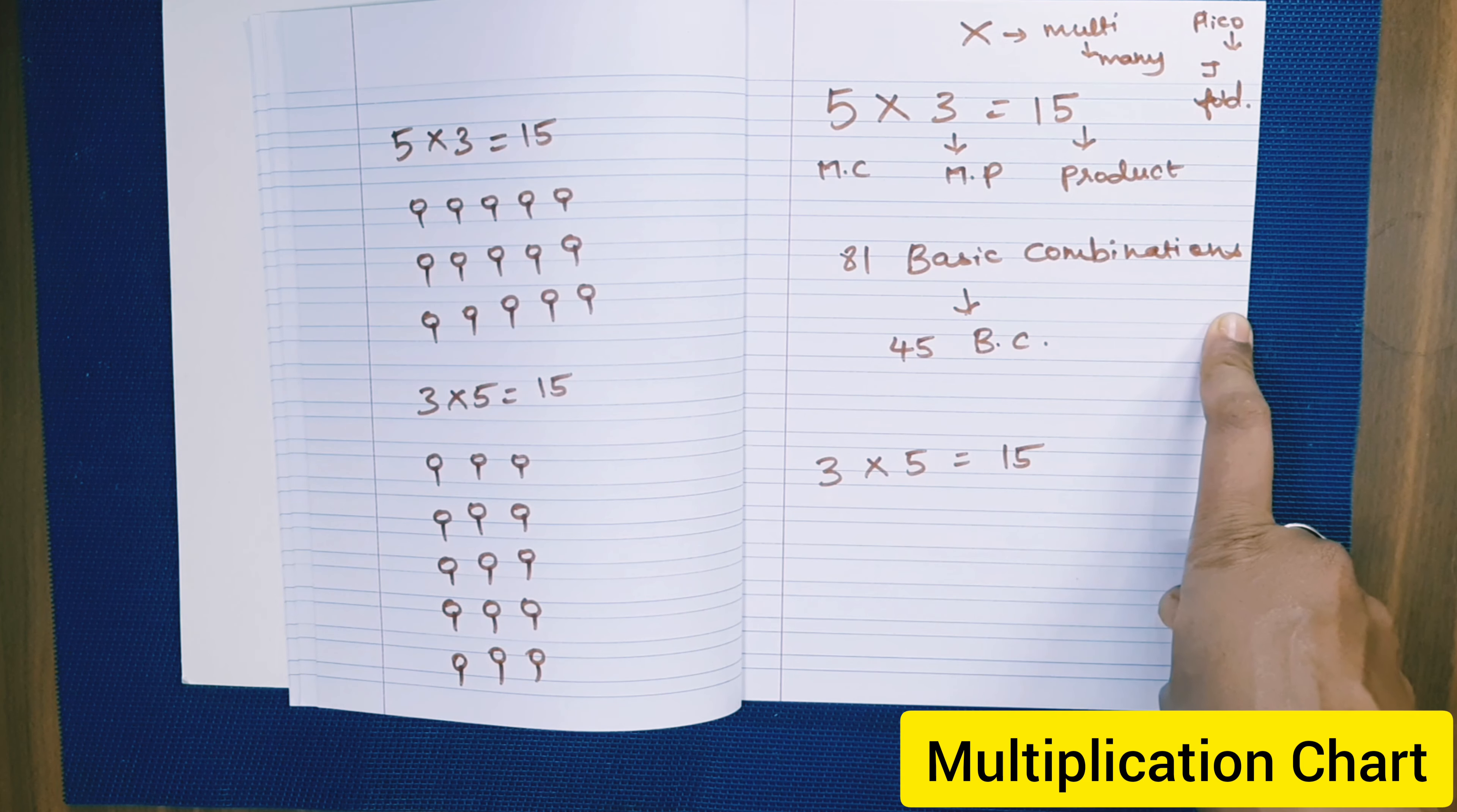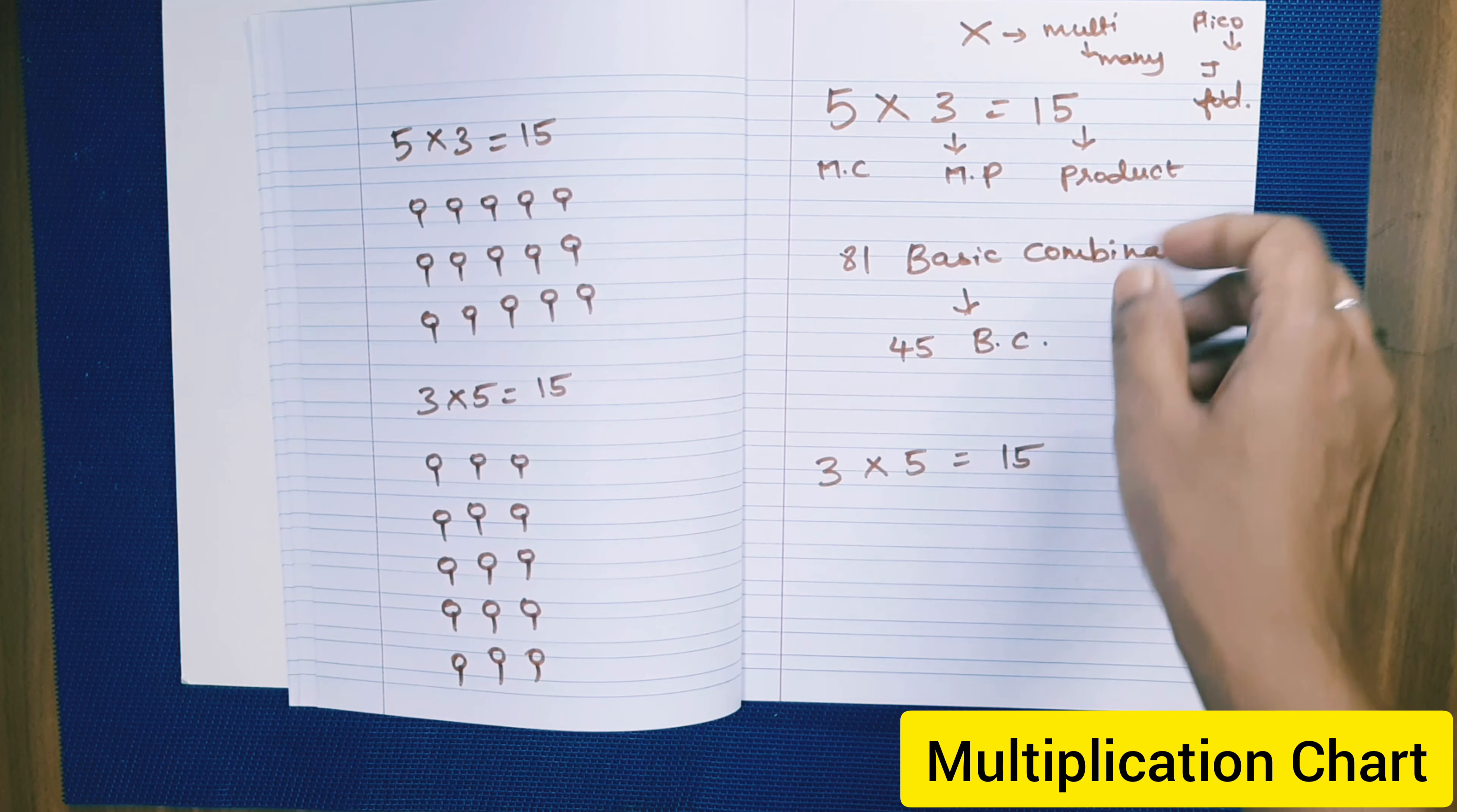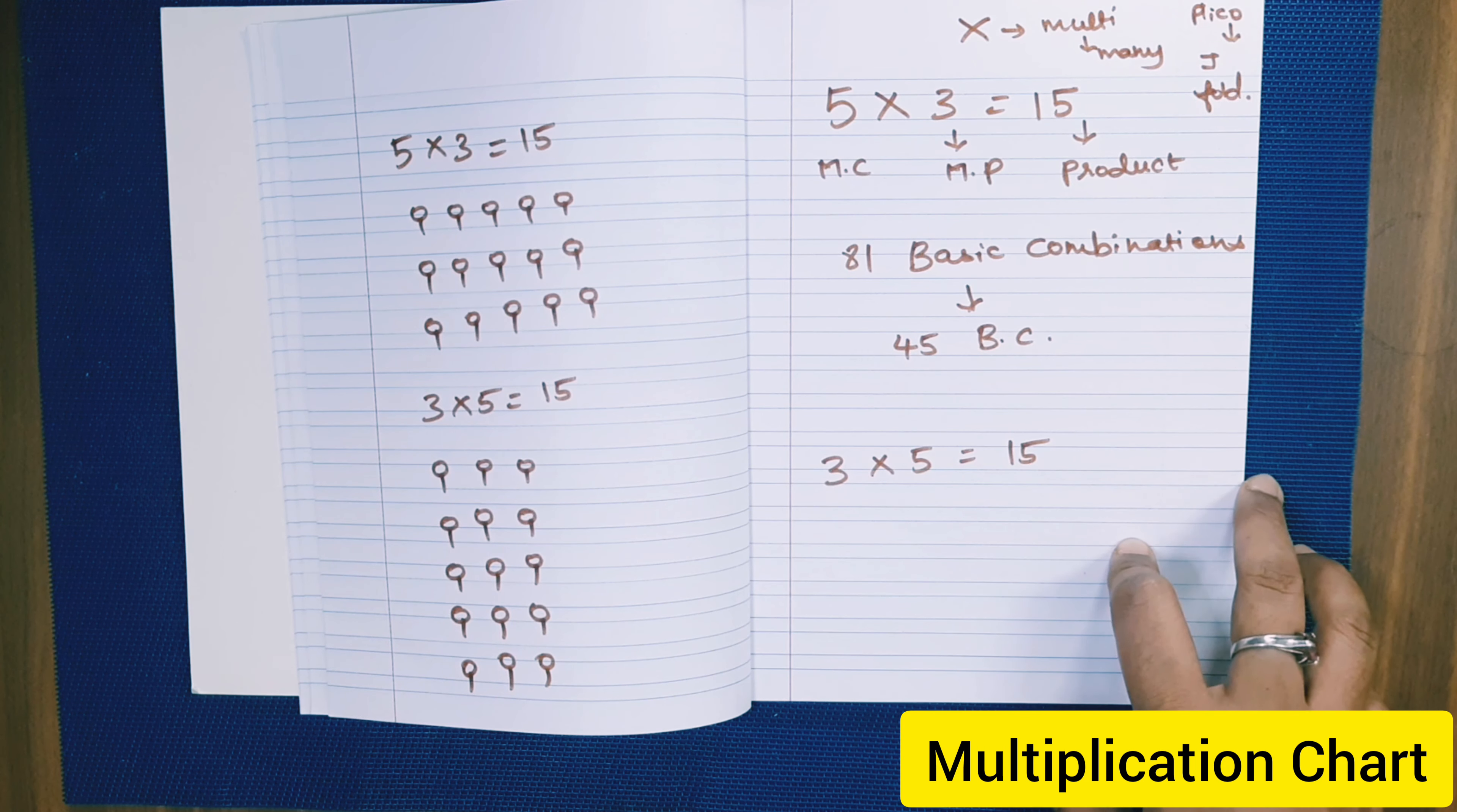There are 81 basic combinations, but it's not necessary that we should memorize or register in the mind of the child all 81. Out of these 81 basic combinations, if you know 45 basic combinations, the child should be able to tell us any combination.